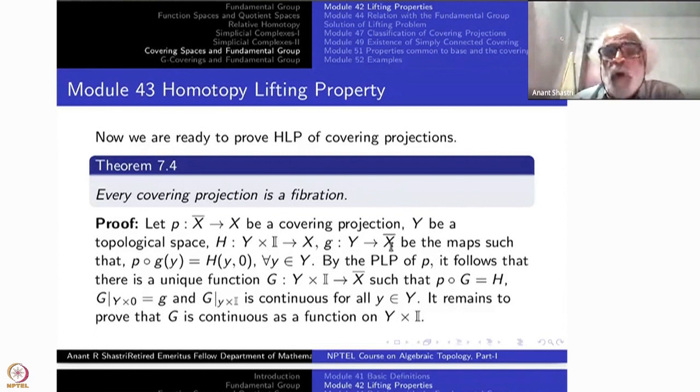Do it for all the y. What you get is a function G with this property, but this function may not be continuous as a function from Y cross I to X bar. It is continuous whenever you restrict the first coordinate y to a single point. So that much you have already got and once you require, by this requirement as a function, it is unique. There is no choice, but we have to prove that this very G, whatever we have got, is actually continuous function from Y cross I to X bar.